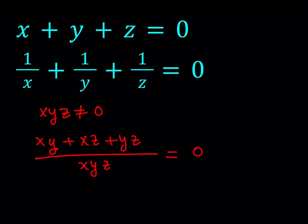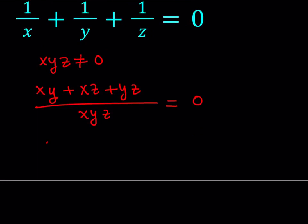Now, this is a fraction and we said that xyz as a product cannot equal 0. Then the numerator must be 0, right? Obviously, in order for this to be 0. So we can safely say that from here, xy plus xz plus yz is equal to 0.